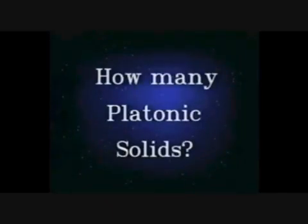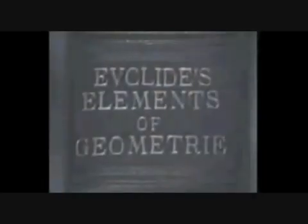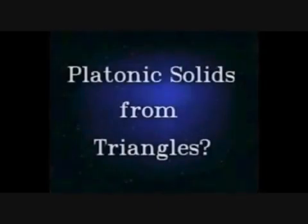Over 2,000 years ago, a mathematician named Euclid wrote a book called The Elements. This book is the basis for most of today's high school geometry courses. The grand finale of The Elements is a section about the Platonic solids, in which Euclid shows there are exactly five. His explanation goes something like this.